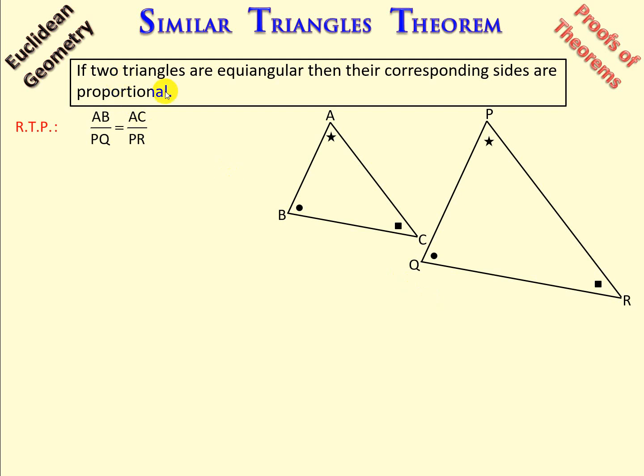The theorem states if two triangles are equiangular, which means that A is equal to P, B is equal to Q, and C is equal to R, then the corresponding sides are in proportion.